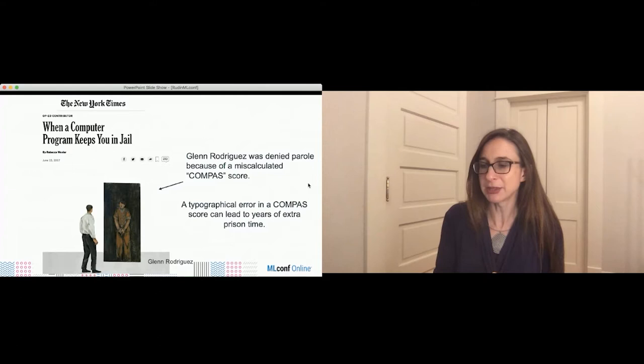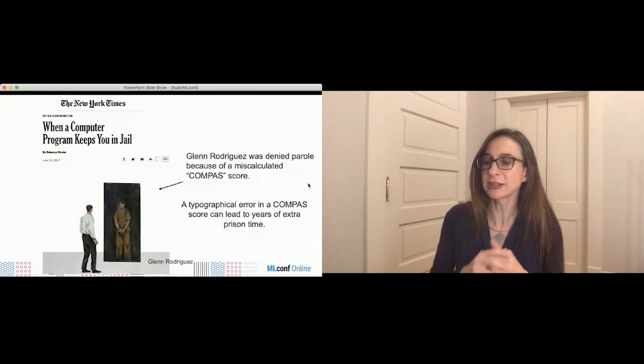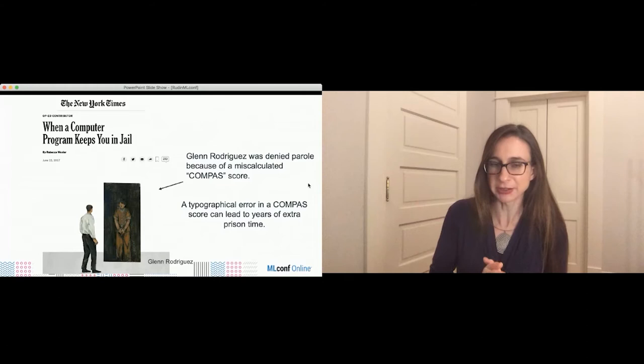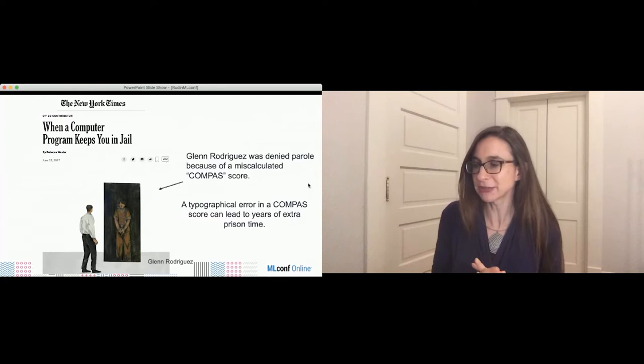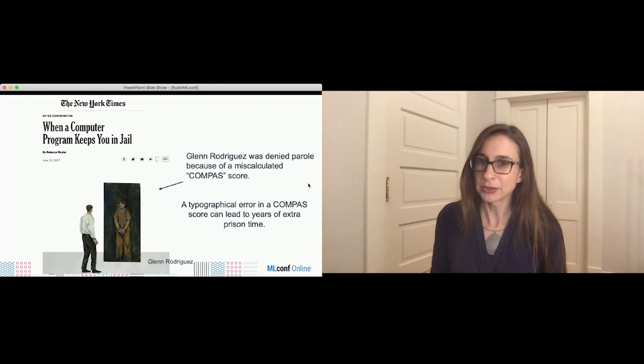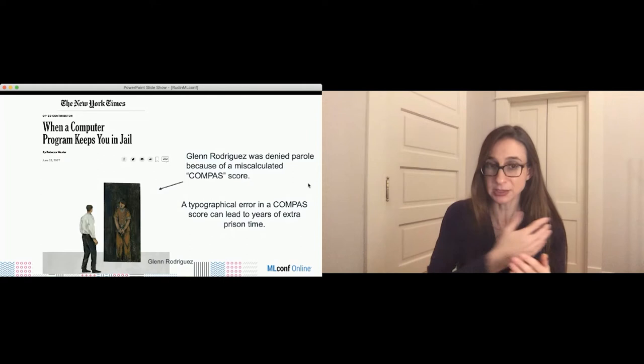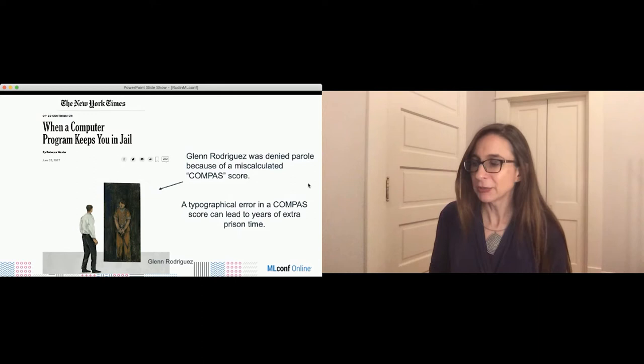At the parole board hearing his parole was denied and there was nothing he could do about it. After the hearing he compared his score sheet to someone else's and noticed an error in his criminal history features. The COMPAS model used for this decision had up to 137 factors in it, so it wasn't easy to spot an error in its proprietary model. This same situation probably happens to many people since it's widely used across the criminal justice system. If the model were interpretable, it would have been much easier to spot the error.